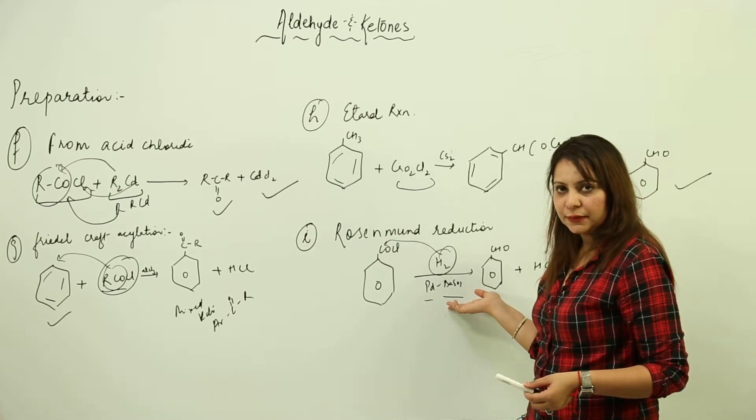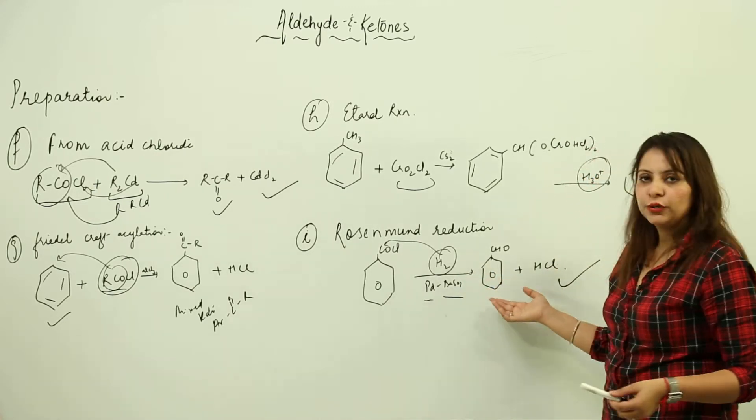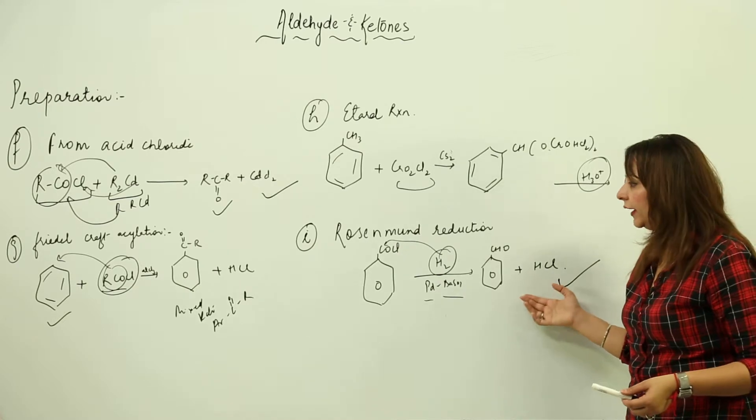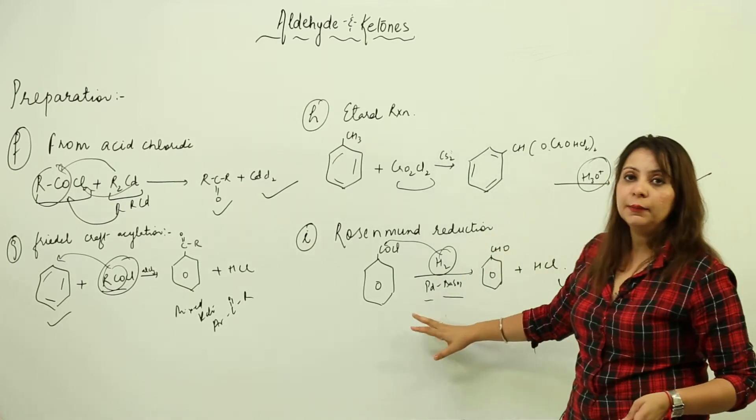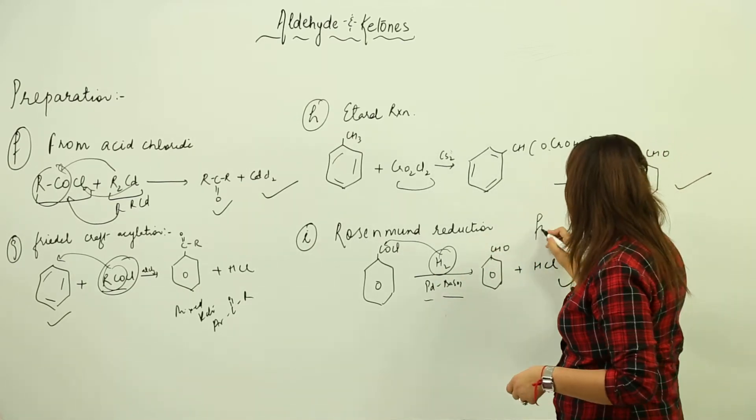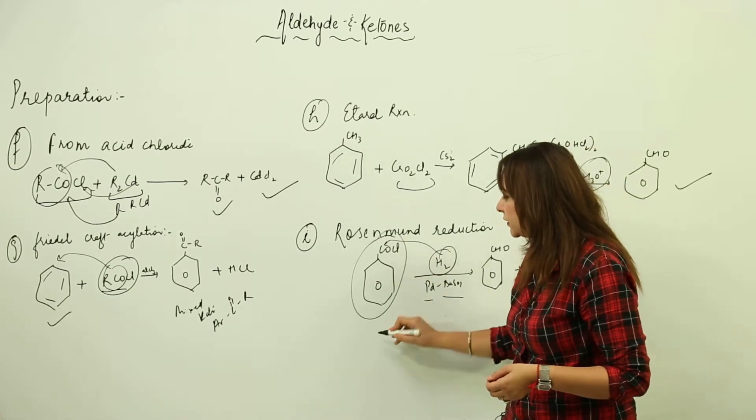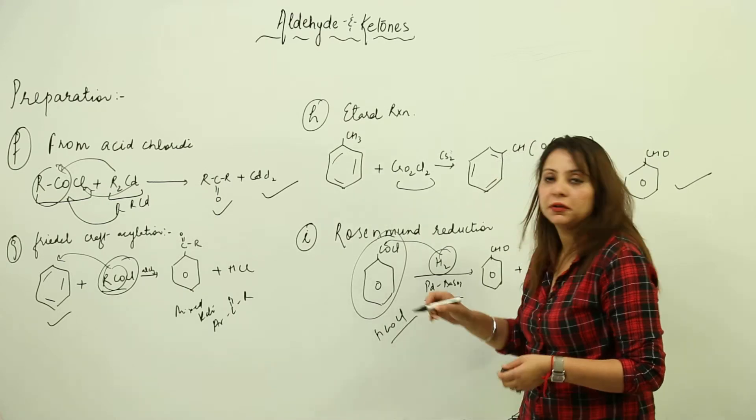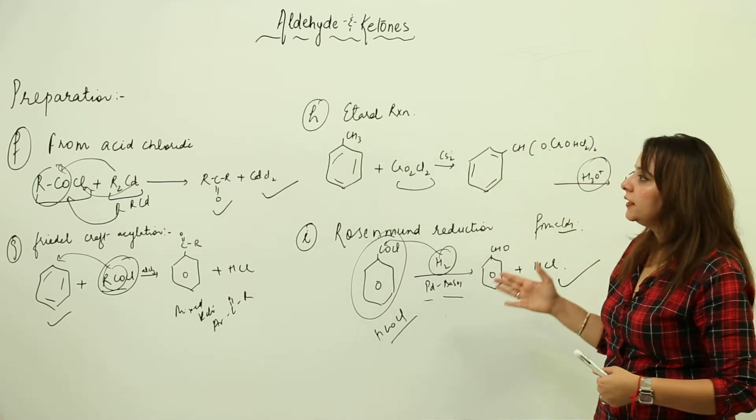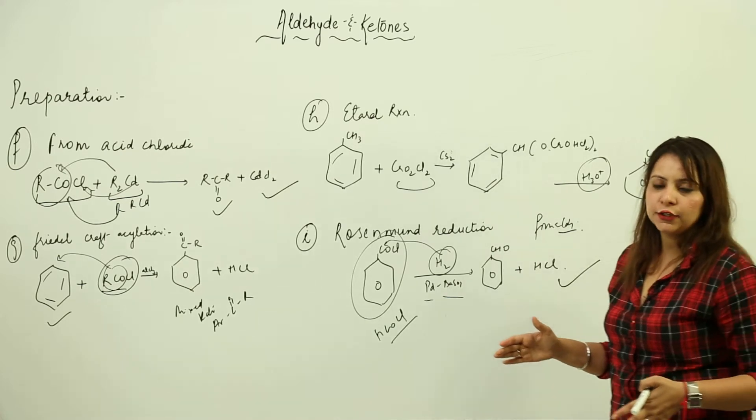We cannot prepare formaldehyde with this method. There's one limitation - we cannot prepare formaldehyde because HCOCl is highly unstable, so we cannot use that. These are the preparations of aldehydes and ketones.